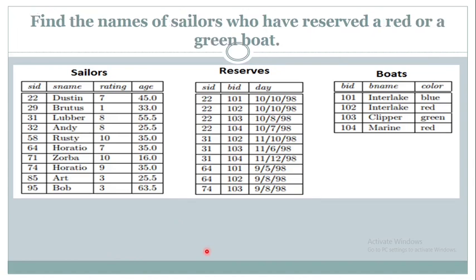Let us solve the next question: Find the names of the sailors who have reserved a Red or a Green boat. Some sailors might reserve a Red boat, others a Green boat. Whenever there is an 'or' in the statement, you need to make use of a Union operation. Conversely, whenever there is 'and', you need an Intersection operation, and whenever there is 'for all', you need a Division operation. Since here we have 'or', we need to use Union.